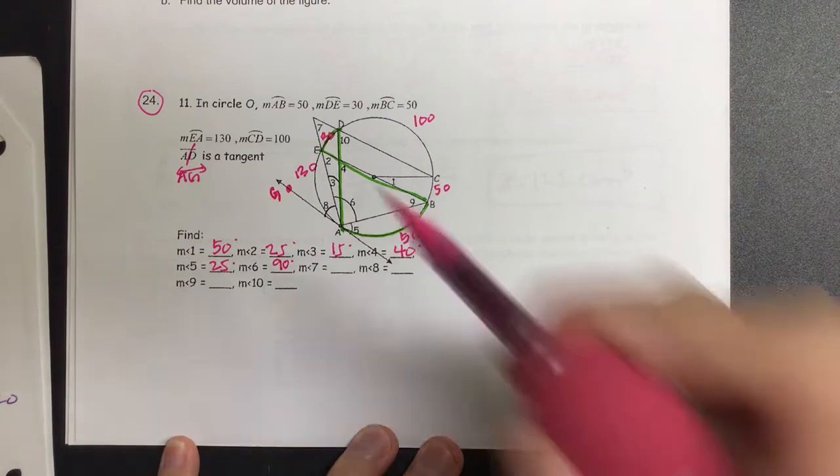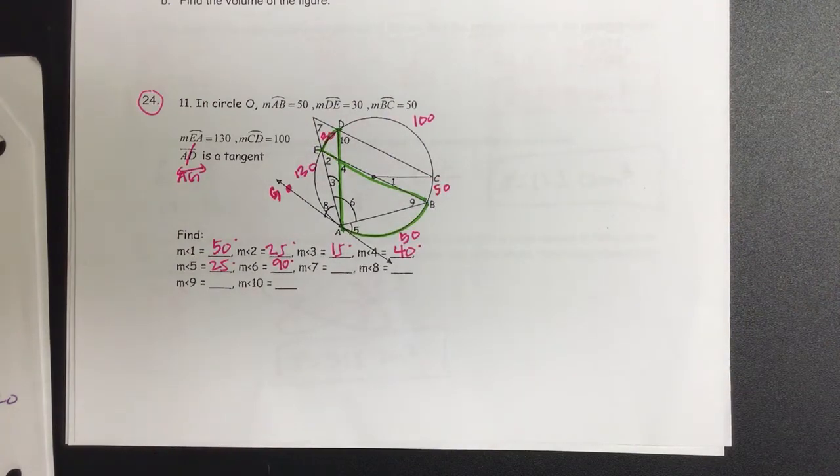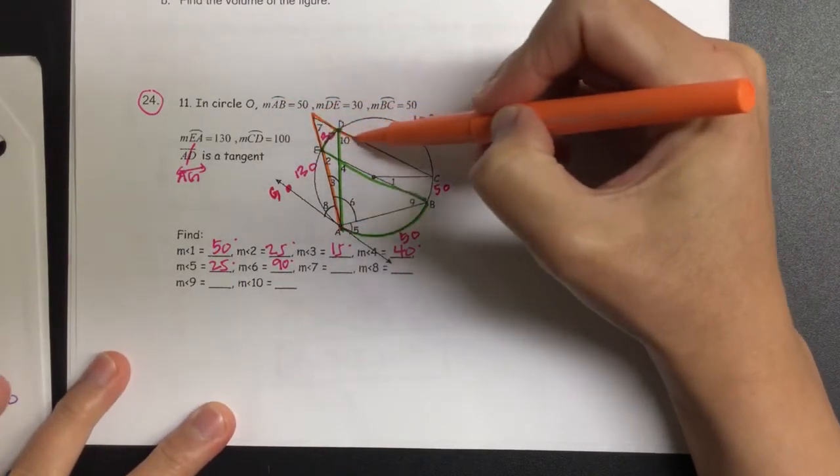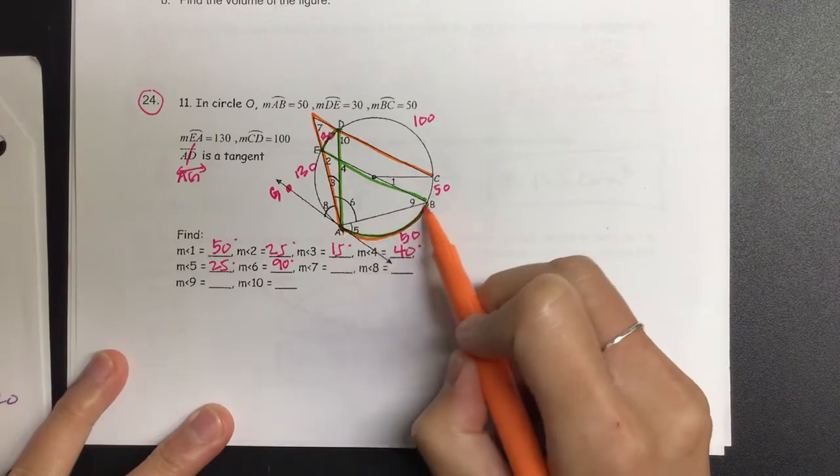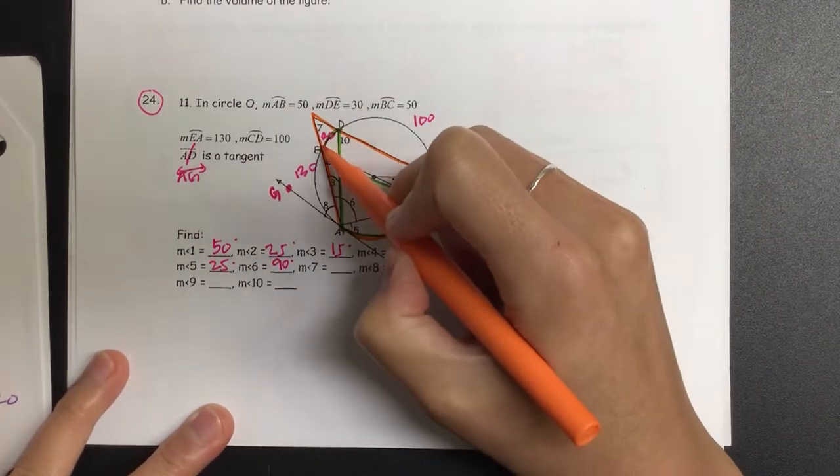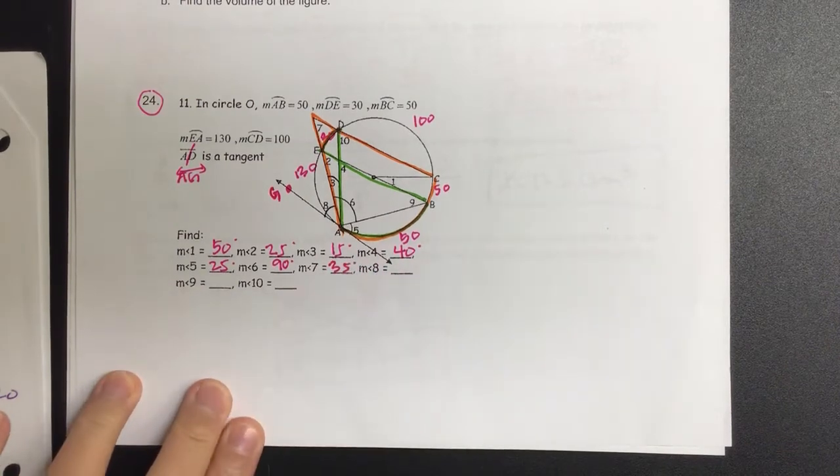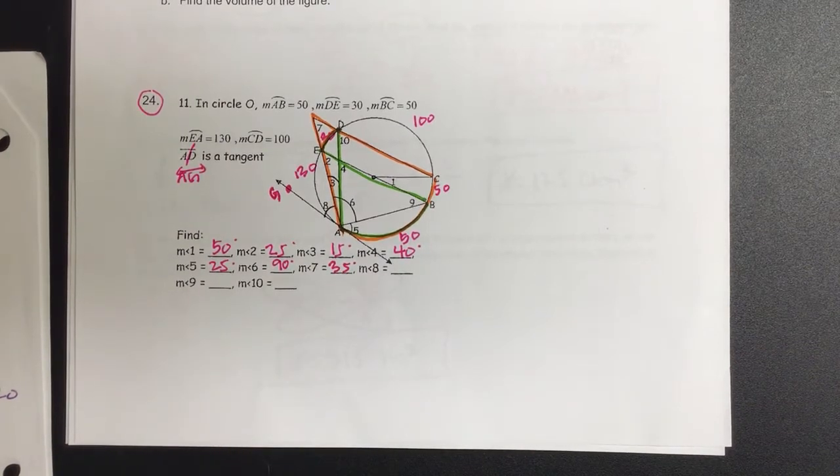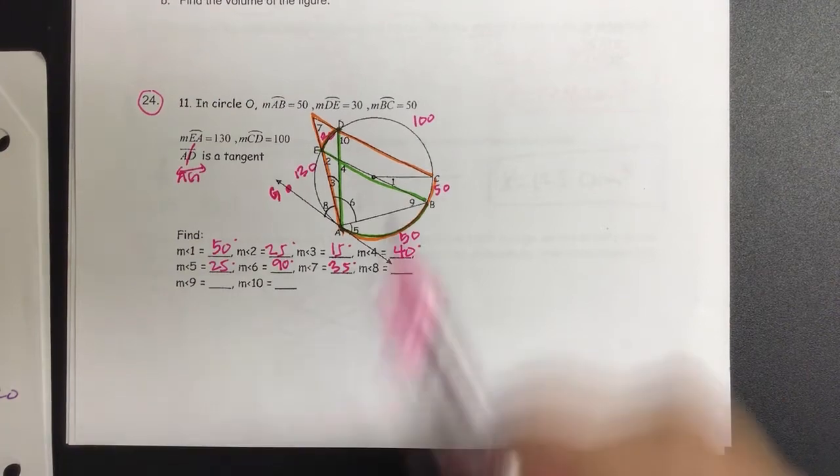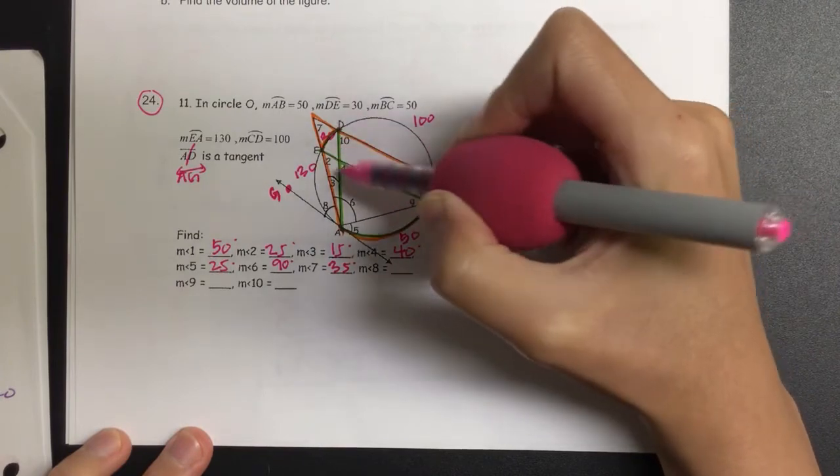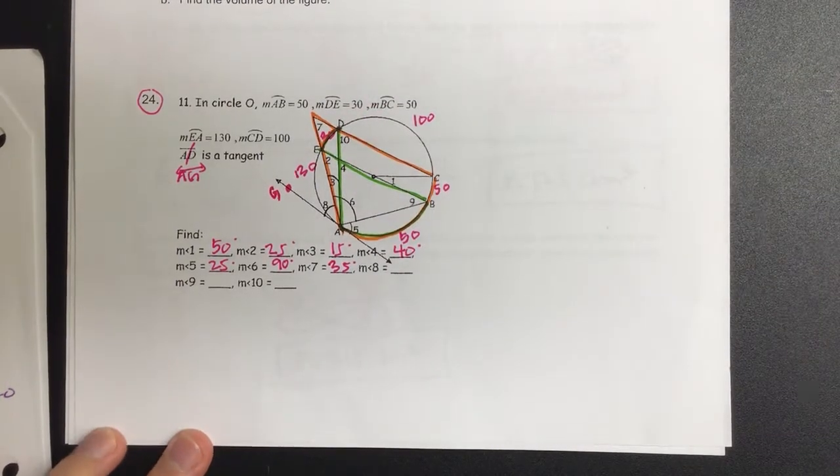Go to 7. 7 is out here. So if it's on the outside, we subtract them. So here's angle 7. We take the larger arc, which is 100, minus 30, which is 70, divided by 2. How many would that give us? 35. This angle 30 is basically the same as a central angle, and that central angle could be smaller.